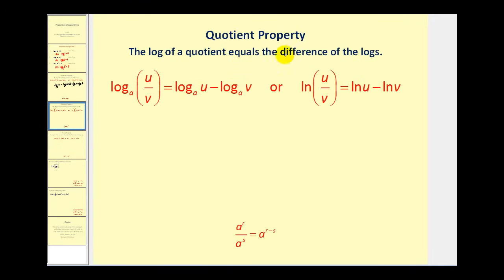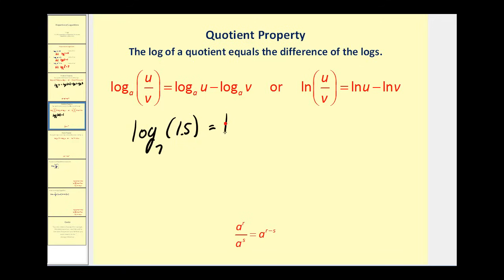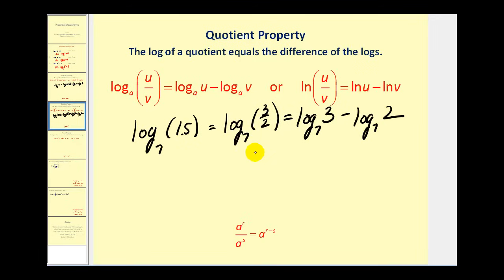The quotient property of logarithms states the log of a quotient equals the difference of the logs. So log base A of U divided by V equals log base A of U minus log base A of V. This also applies with natural logs. Connecting to the quotient property of exponents: when dividing with the same base you subtract exponents, and similarly you subtract logarithms. For example, log base seven of 1.5 — since 1.5 equals three halves — can be rewritten as log base seven of three minus log base seven of two.